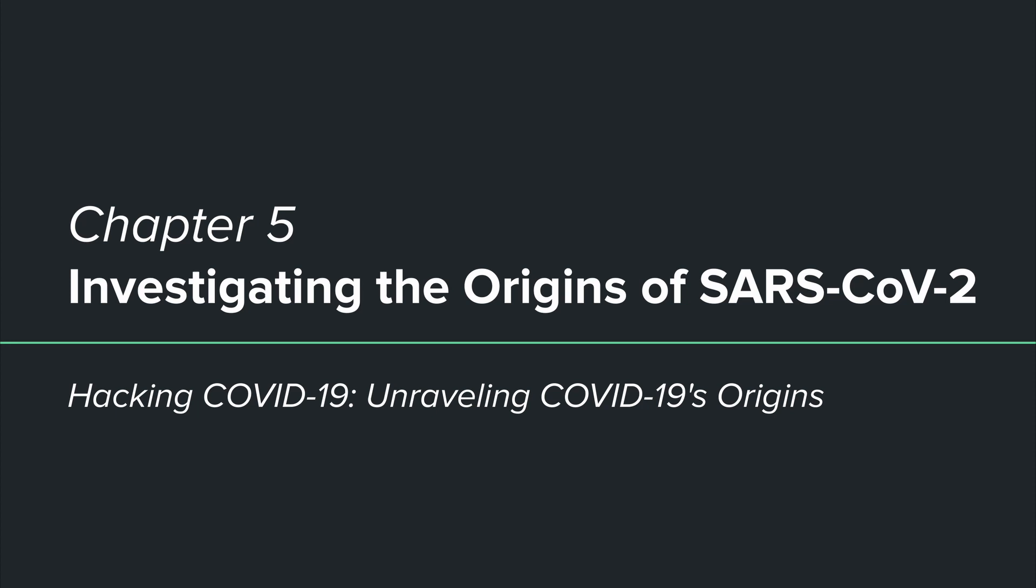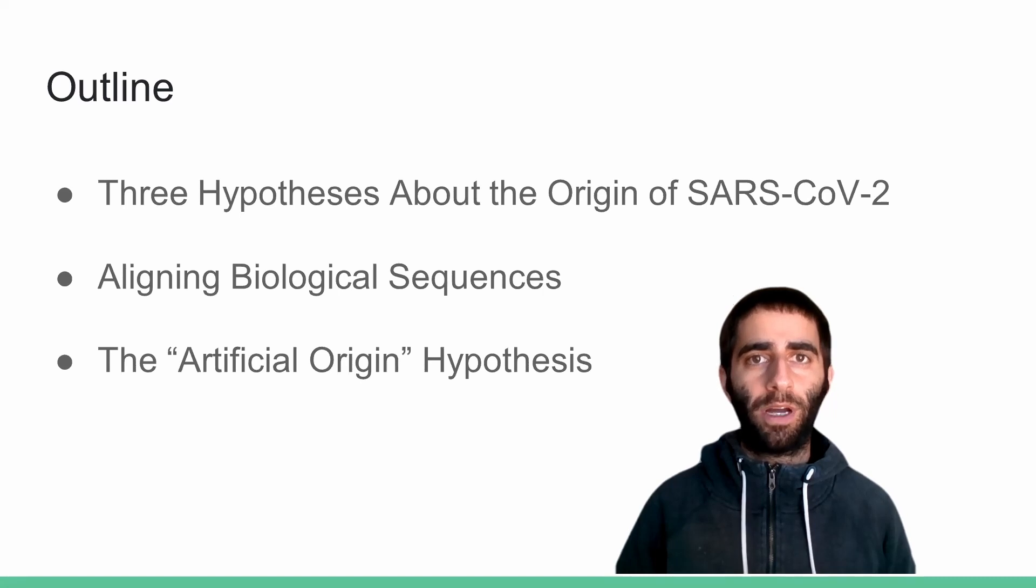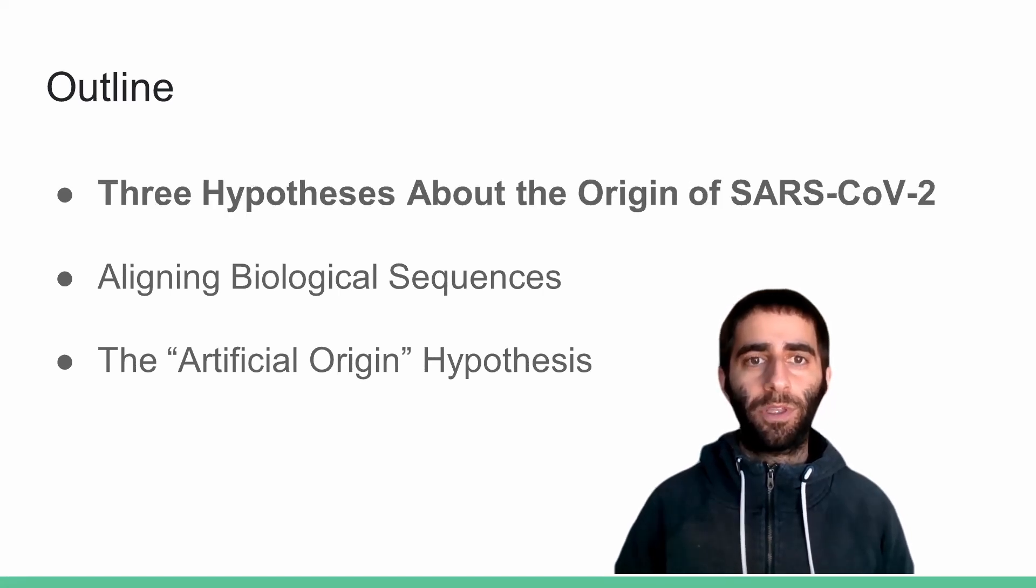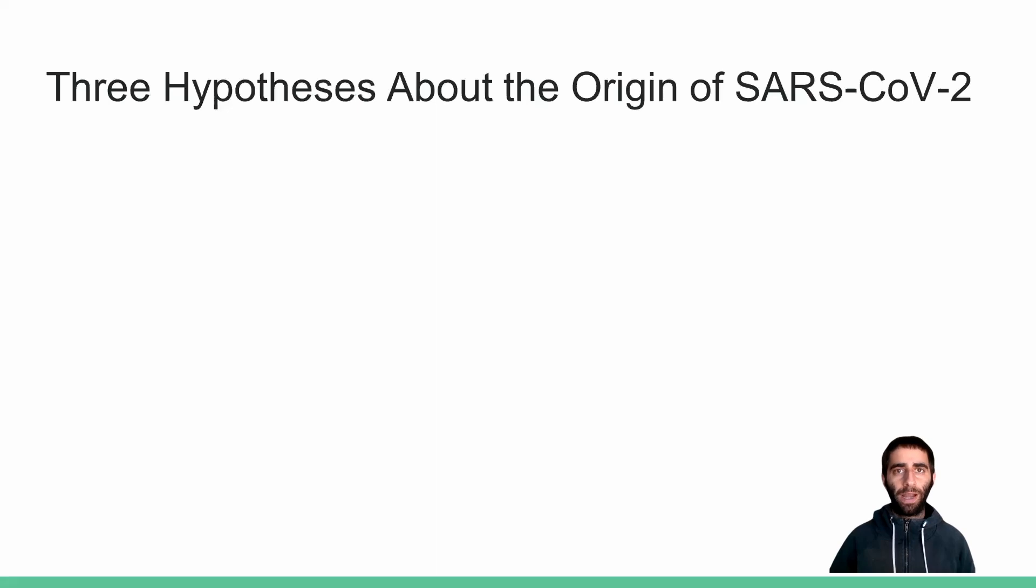Chapter 5, Investigating the Origins of SARS-CoV-2. In this chapter, we will try to unravel the origins of SARS-CoV-2. Let's first introduce the three most prominent hypotheses about the origins of SARS-CoV-2. For now, we will just provide a brief introduction, and we will later thoroughly dive into each of them.